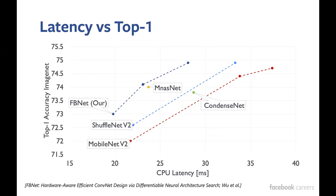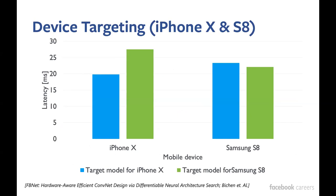Because you're doing architecture search, you have a little more space in finding better architectures. One important thing is that you can target specific devices and find the best architecture for different devices. Shown here is performance for iPhone X and Samsung S8. When you search for a model specifically for iPhone X, it performs better on the iPhone X but not on the Samsung S8. If you search for the model for the Samsung S8, it works better on the S8 and not the iPhone X.